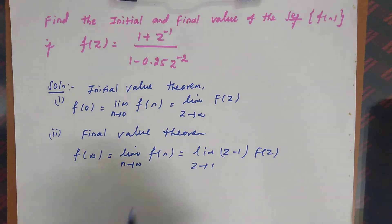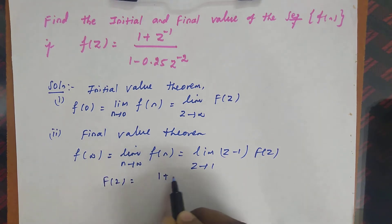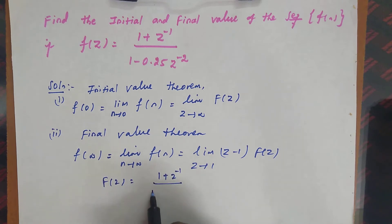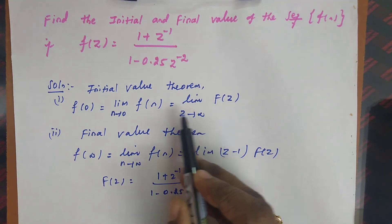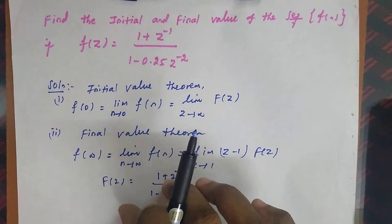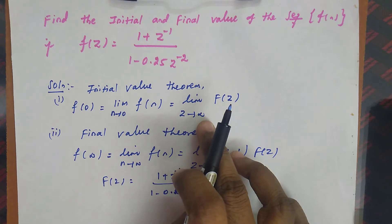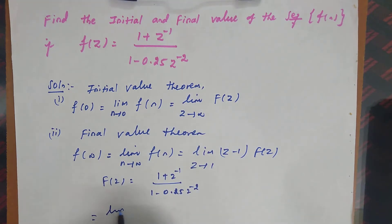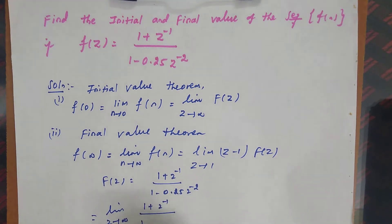The given F(z) equals (1 + z⁻¹) divided by (1 - 0.25z⁻²). To find f(0), we apply the limit as z tends to infinity: limit z→∞ of (1 + z⁻¹) divided by (1 - 0.25z⁻²).